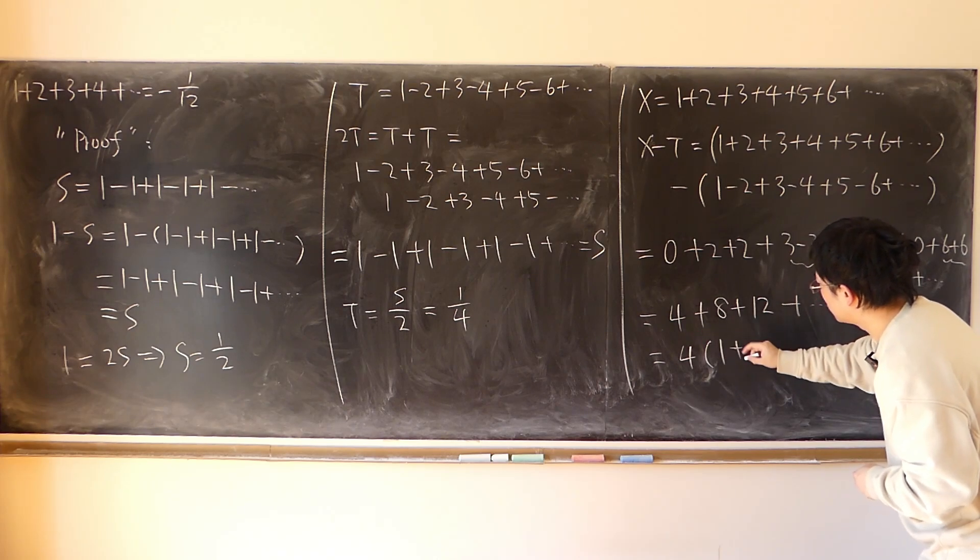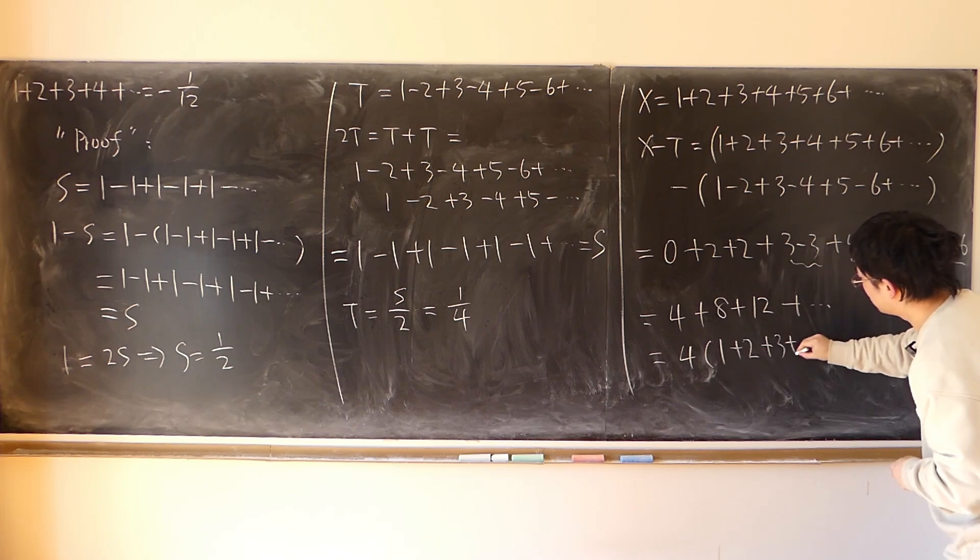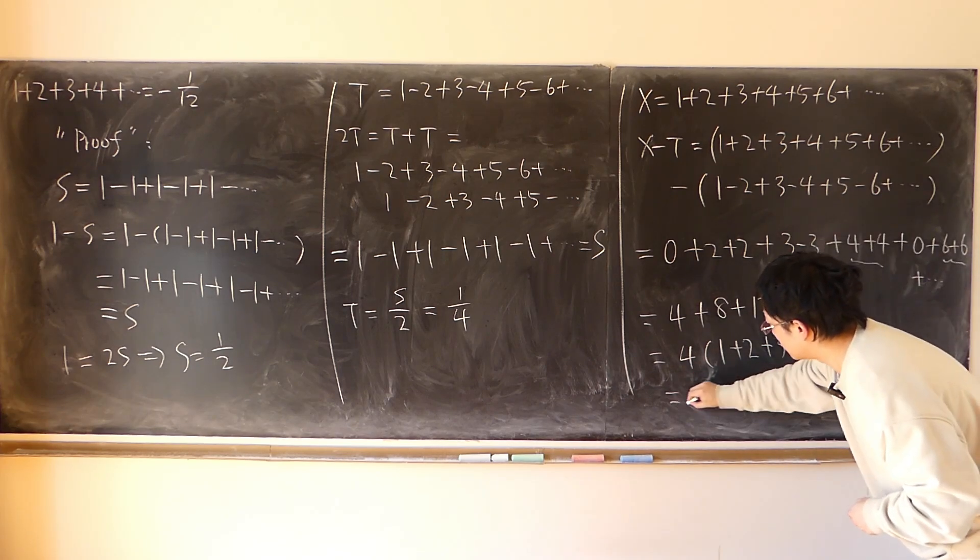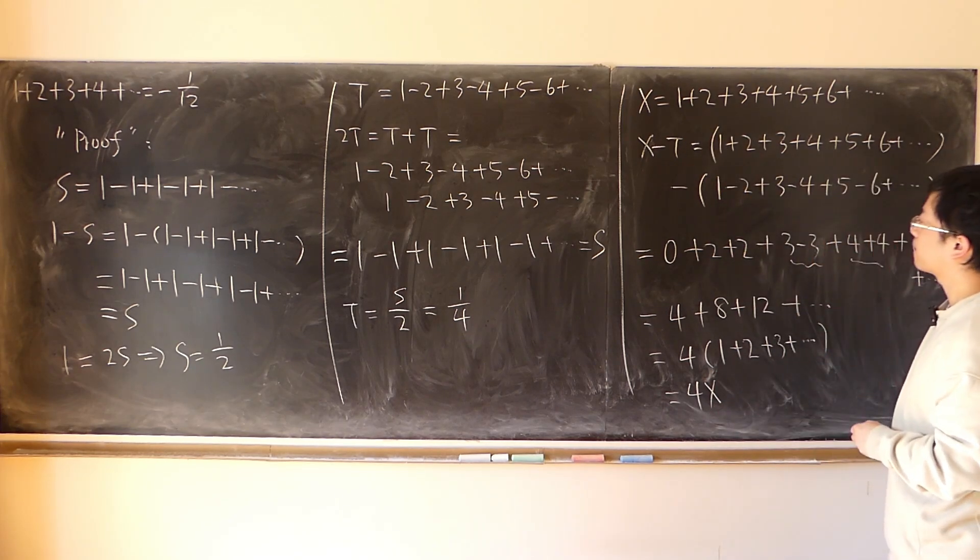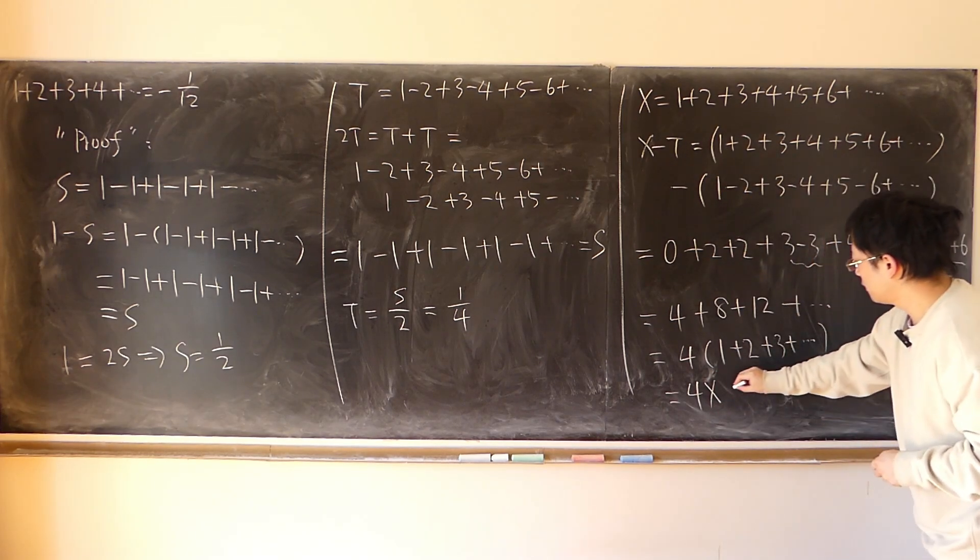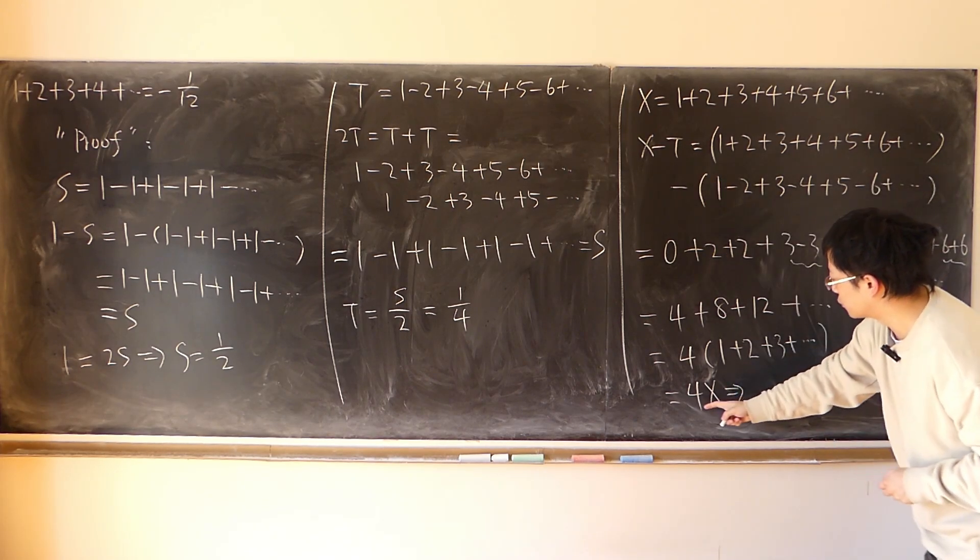So that is equal to the factor of 4. We have 1 plus 2 plus 3. And that's exactly 4 times x.